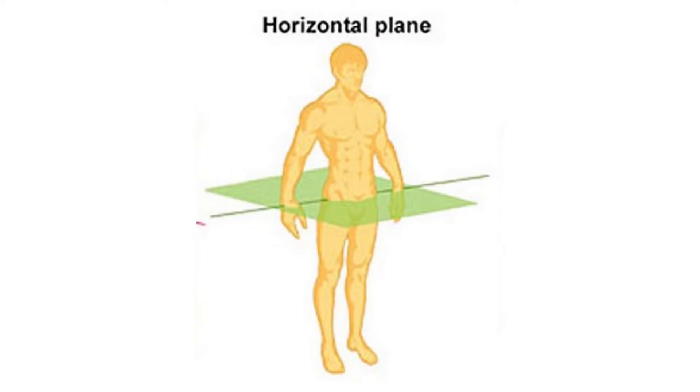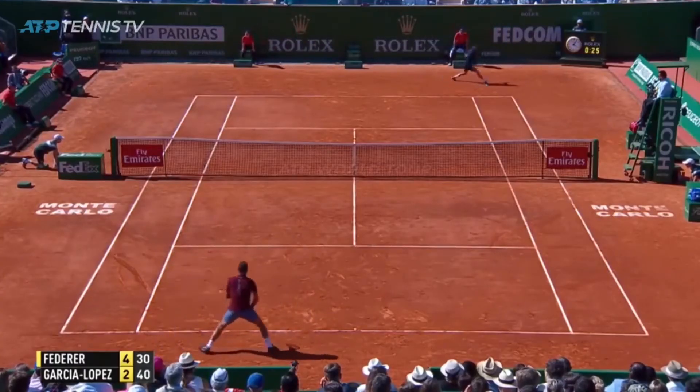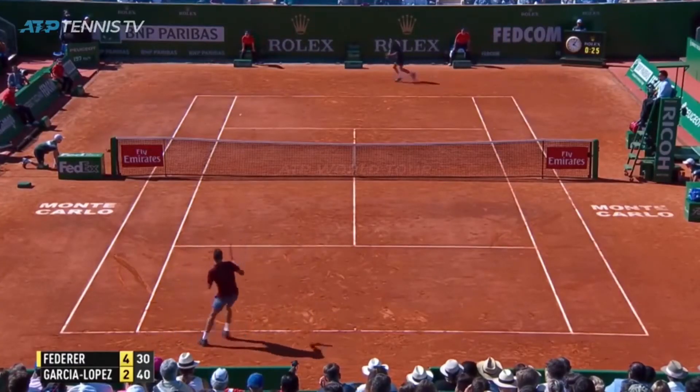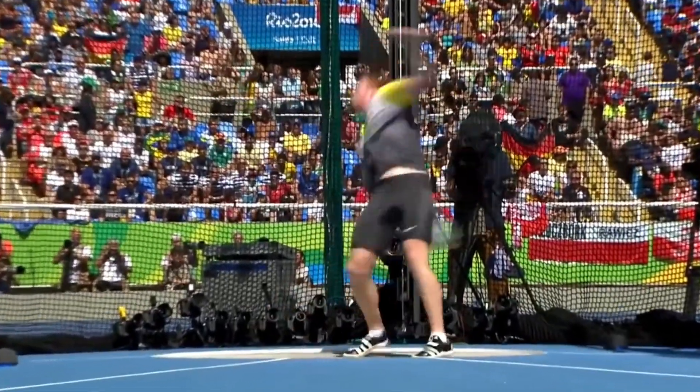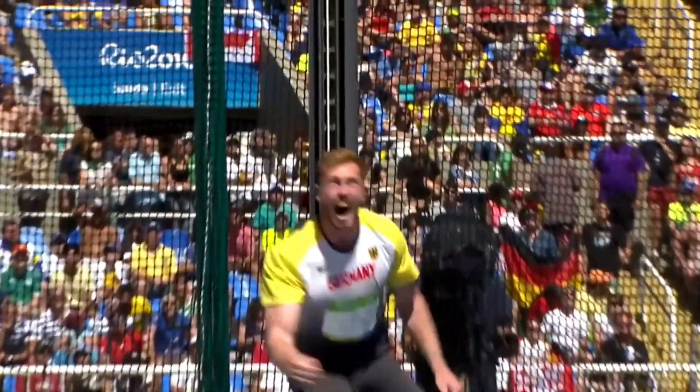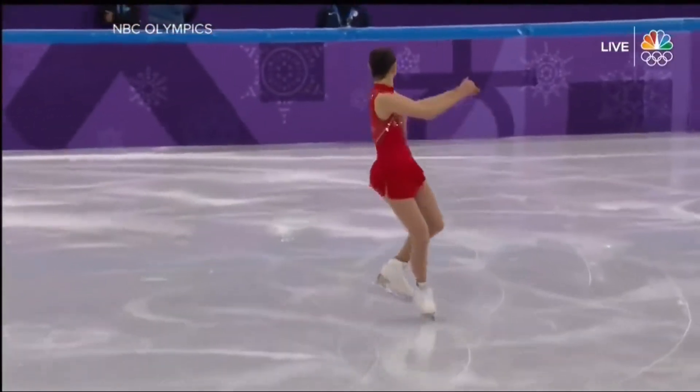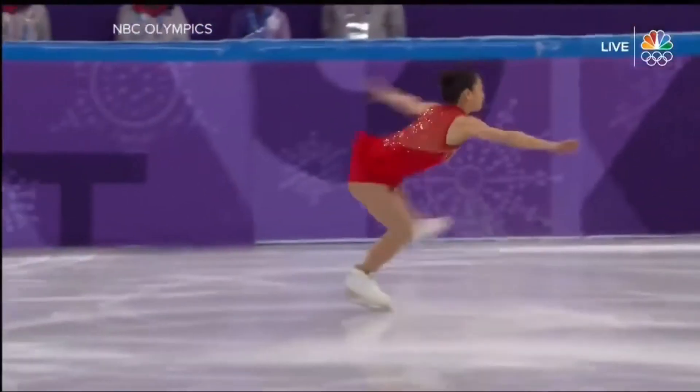The third plane of motion is the transverse or horizontal plane. Unlike the vertical planes, this one is horizontal — cutting you at the waist into upper and lower halves. Any twisting or rotational movement falls here. Examples include Russian twists, shoulder external and internal rotation, a tennis return swing, a golf swing, a spinning backhand in martial arts, a discus throw, and a figure skater doing a triple axel.